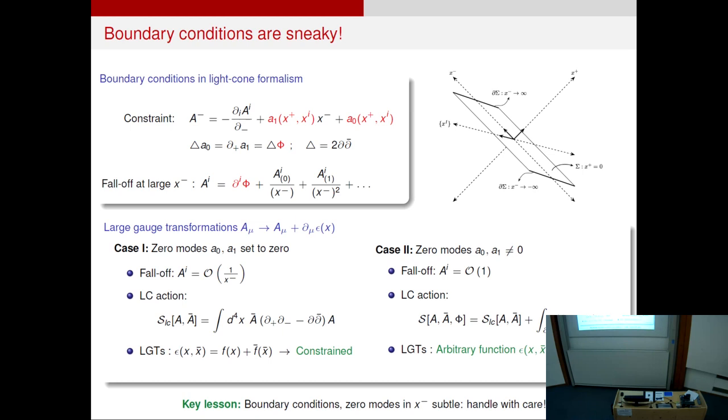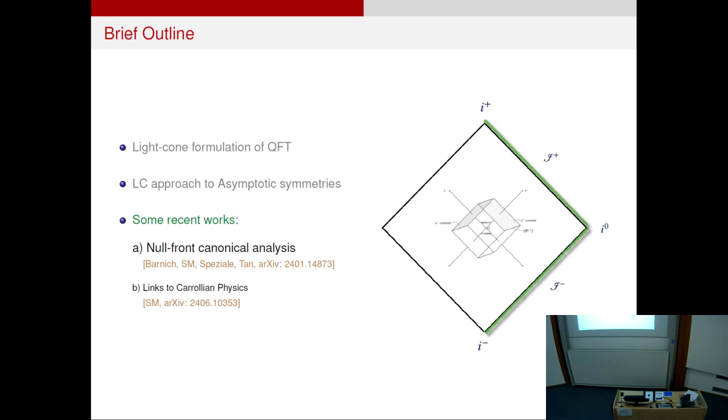What we learned from this simple exercise is that the boundary conditions enter the game in the light cone approach in a bit of an indirect manner. So one has to be very careful about how to deal with them. And in an effort to understand this problem better, we made some progress in two simple problems. So this one, this is a work we did with Glenn Barnish, Simone Special, and Wendy Tan, where we looked at 2D chiral bosons. And the reason we chose that is because it's a classic problem in canonical quantization. And we wanted to prove that the way we typically do it in instant form, where we quantize as x0 being the time, is the same as doing a light cone quantization. And we wanted to prove that. And then I'll tell you a bit about how all of this story links to Carrollian physics, if I have time.